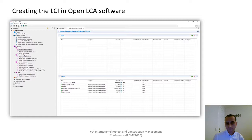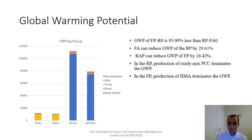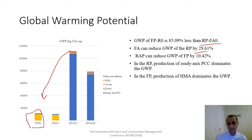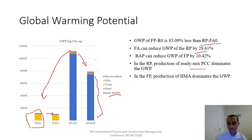The global warming potential of flexible pavements without reclaimed asphalt pavement is 85% less than rigid pavements without fly ash. Fly ash can reduce the global warming potential of rigid pavements by 29%, while RAP can reduce the global warming potential of flexible pavements by 10%. As seen in the chart, production of ready-mix concrete dominates the global warming potential of rigid pavements, while production of hot-mixed asphalt dominates the global warming potential of flexible pavements.